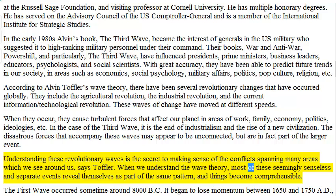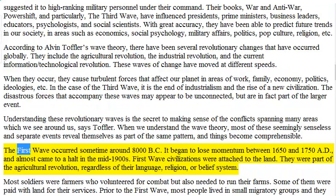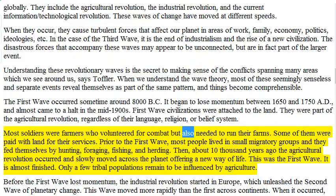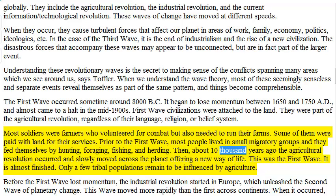When we understand the wave theory, most of these seemingly senseless and separate events reveal themselves as part of the same pattern, and things become comprehensible. The first wave occurred sometime around 8000 BC. It began to lose momentum between 1650 and 1750 AD and almost came to a halt in the mid-1900s. First wave civilizations were attached to the land — they were part of the agricultural revolution, regardless of their language, religion, or belief system. Most soldiers were farmers who volunteered for combat but also needed to run their farms. Prior to the first wave, most people lived in small migratory groups and fed themselves by hunting, foraging, fishing, and herding. Then, about 10,000 years ago the agricultural revolution occurred and slowly moved across the planet offering a new way of life. This was the first wave.